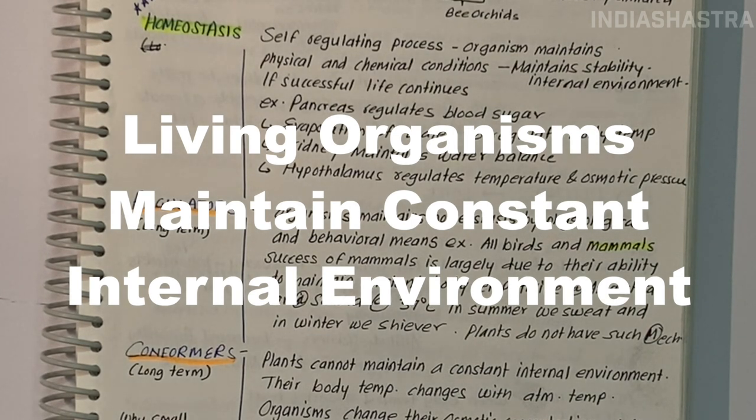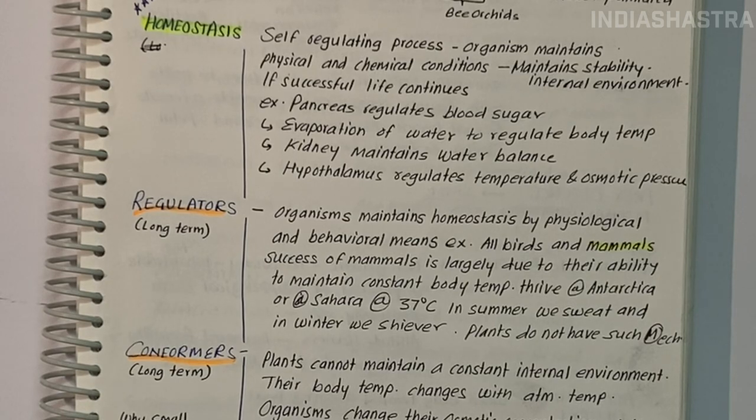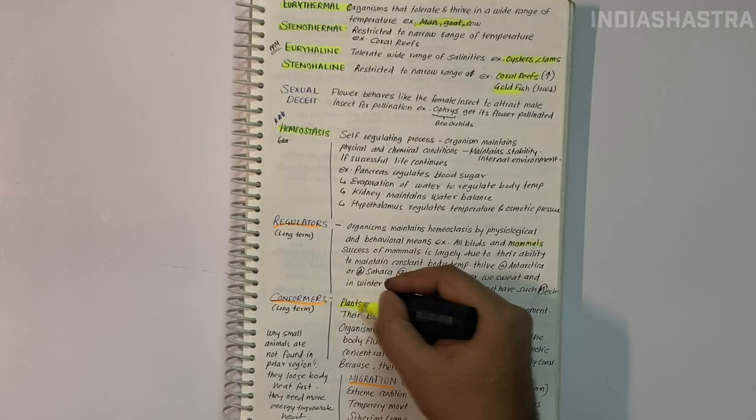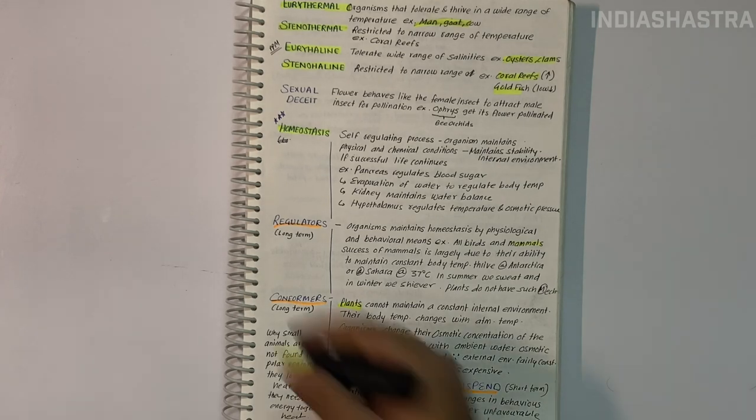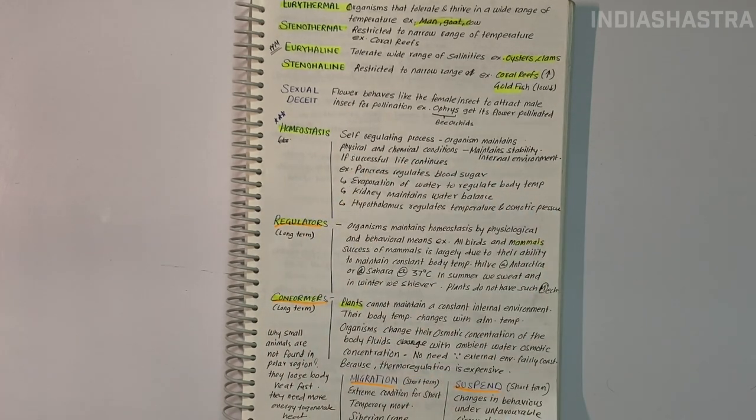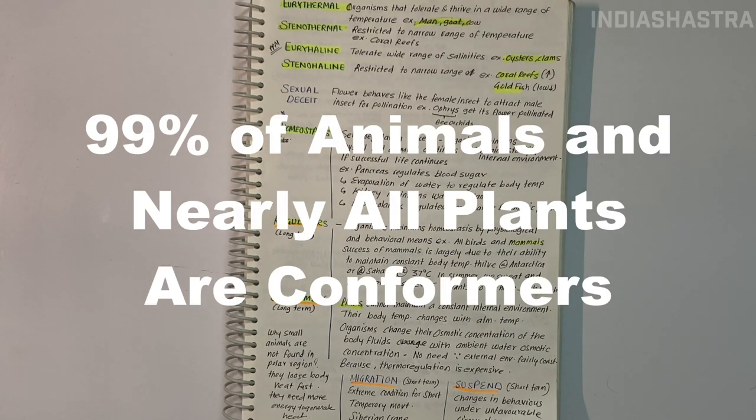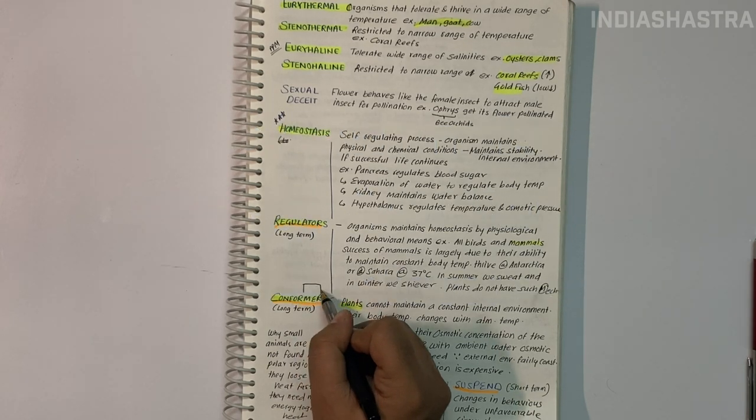In summer, we sweat because outside temperature is more than body temperature. In winters, we shiver which produces heat and raises body temperature. But what about plants? Have you seen them shivering? Can they maintain body temperature?